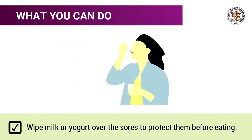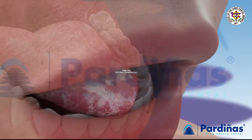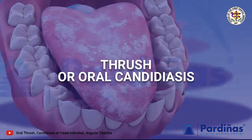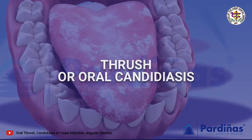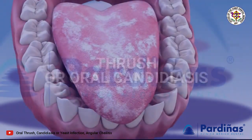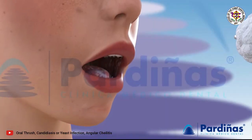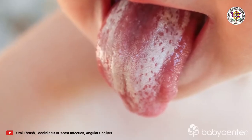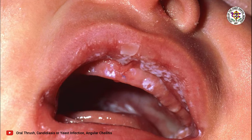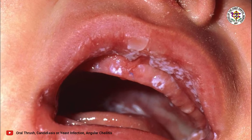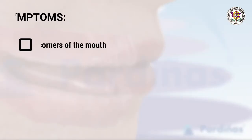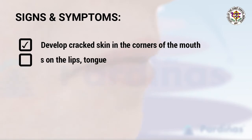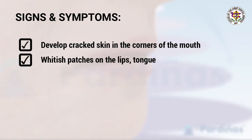Apply white milk or yogurt over the sores to protect them before eating. Oral thrush is the overgrowth of yeast known as Candida albicans. It affects both adults and children but is more common in infants, causing irritation in and around the baby's mouth. Signs and symptoms include cracked skin in the corners of the mouth and whitish patches on the lips and tongue.